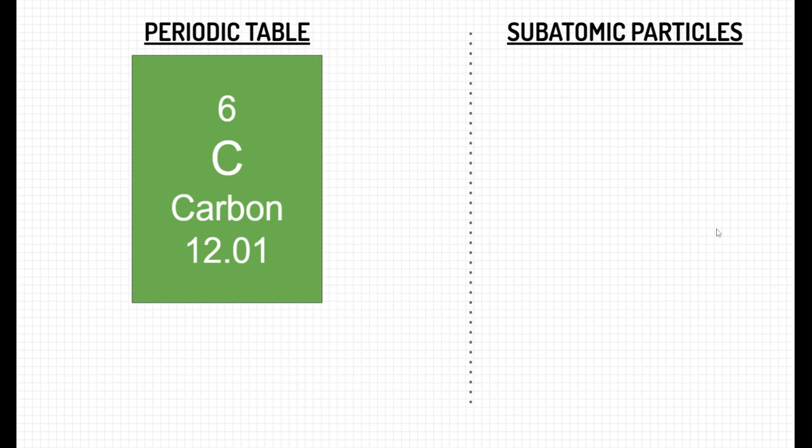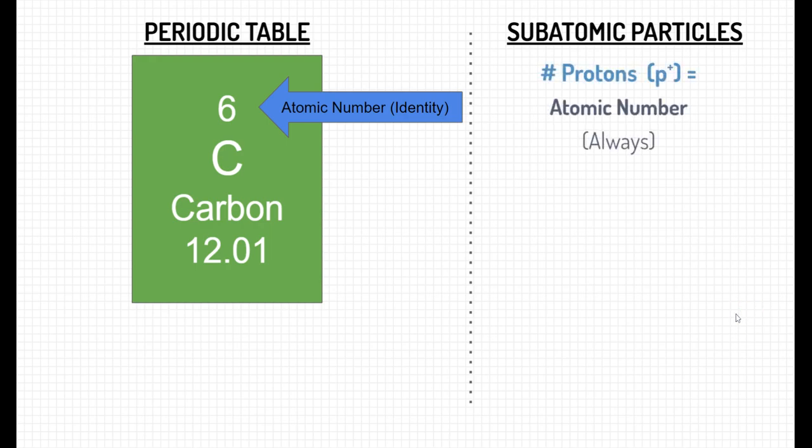Carbon on the periodic table has a certain amount of information. The very top number up here is called the atomic number. It's usually the smaller number within the element symbol. The atomic number is the element's identity. If you remember, that's just the number of protons. The number of protons is equal to whatever the atomic number is of that element. And that is always true for that element.